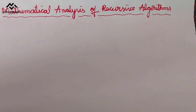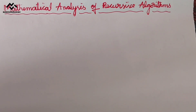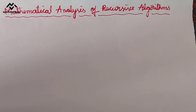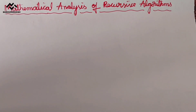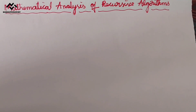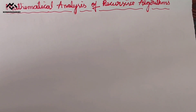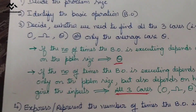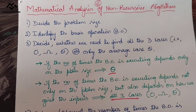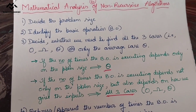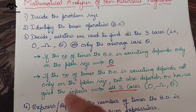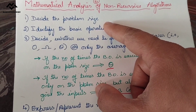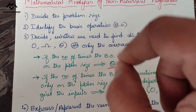Now let us see the steps required to analyze recursive algorithms. In the analysis of non-recursive algorithms we followed five steps: first, decide the problem size; second, identify the basic operation; third, decide whether we need to find all three cases or only the average case. The first three steps are the same for recursive algorithms — only the fourth and fifth steps change.